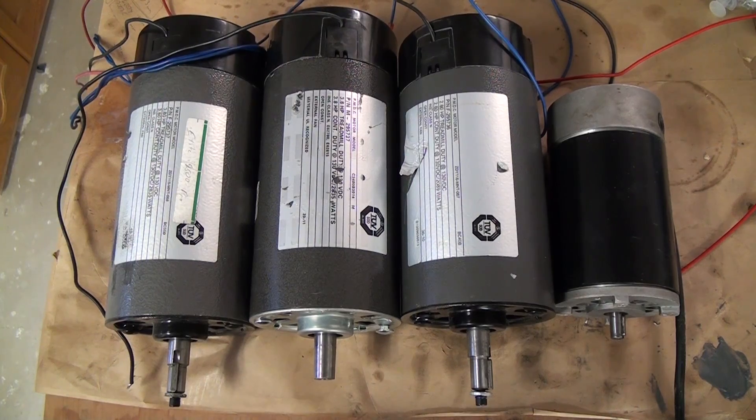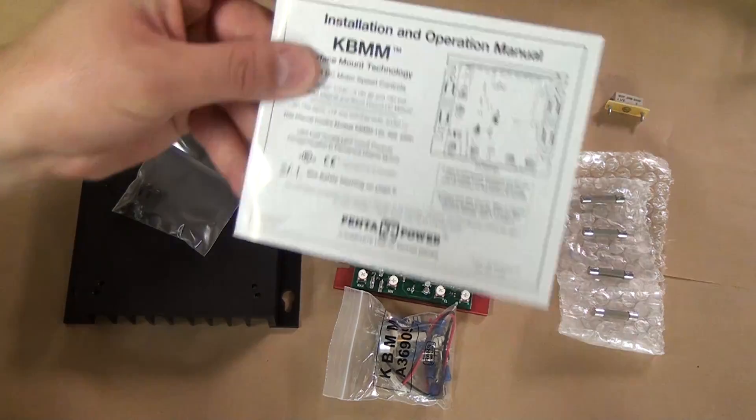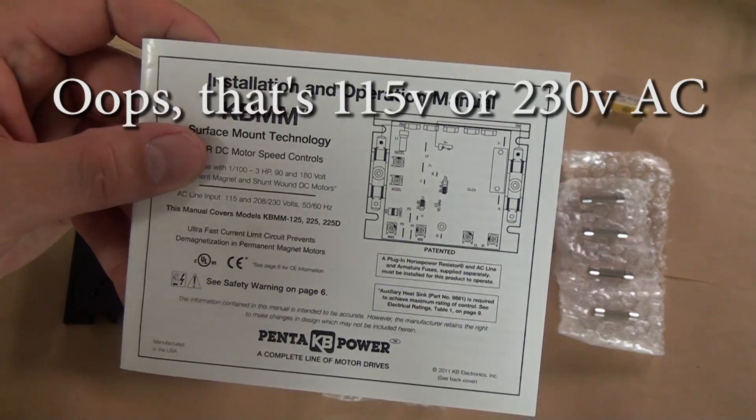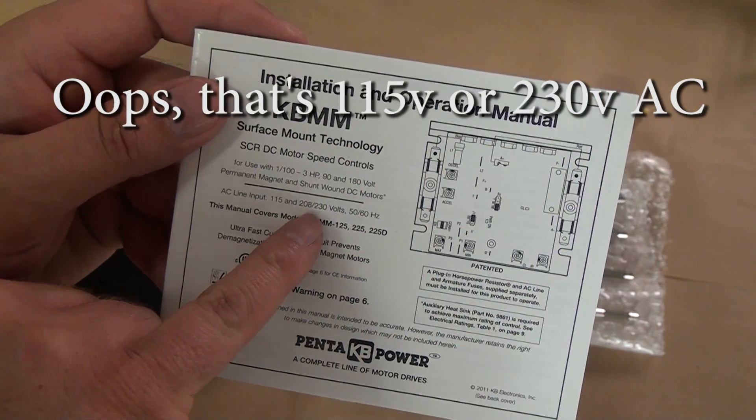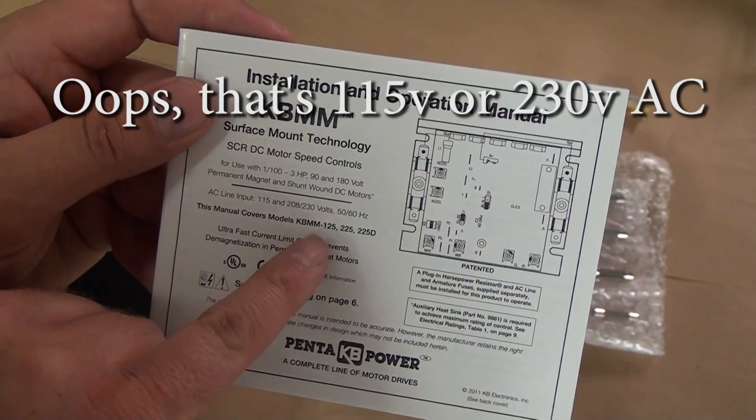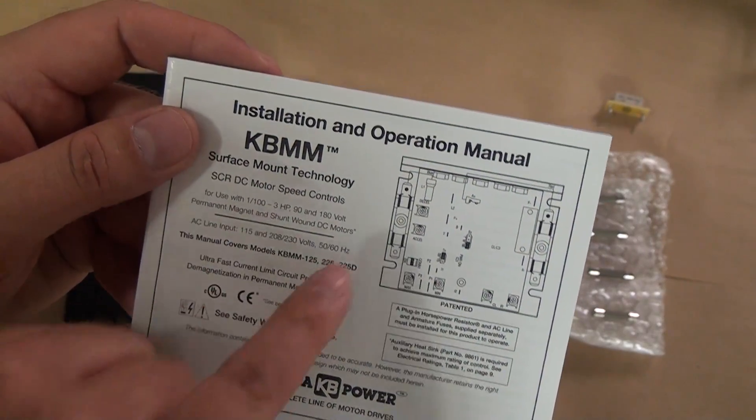The controller I'm using is the KBMM 225D, which can be run at 115 or 230 volts AC. It can support up to 3 horsepower, but you will need that heatsink you can see on the left. The only problem with this controller is that it runs in either 90 volt or 180 volt mode.